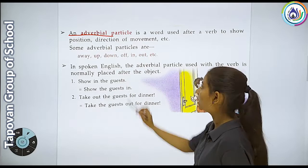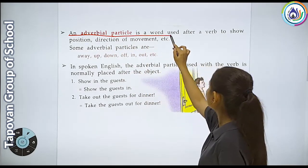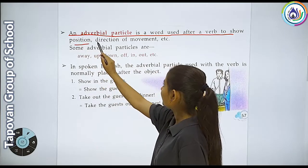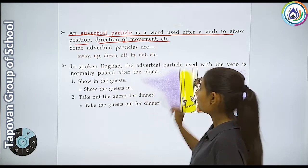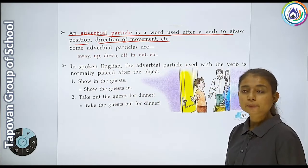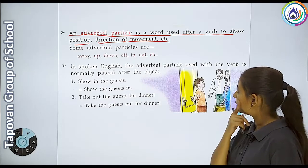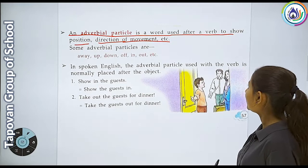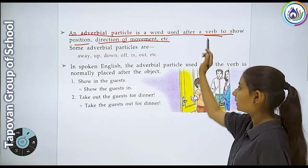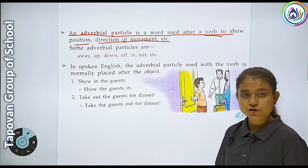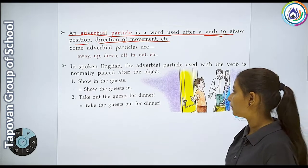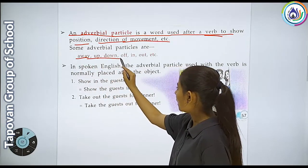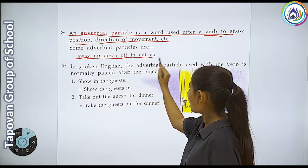An adverbial particle is a word used after a verb to show position, direction of movement, etc. Hum adverbial particle ko verb ke baad use karenge jab kisi position ya direction ke baare mein baat karenge. Jaise ki: away, up, down, off, in, out, etc.